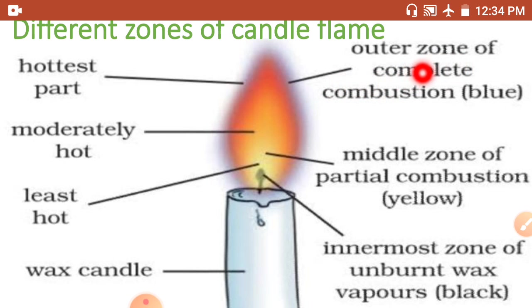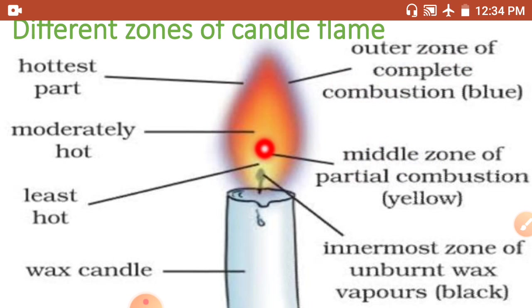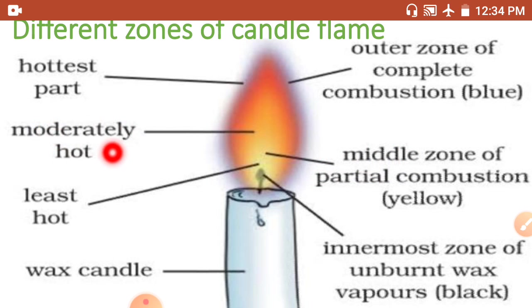The middle zone is yellowish in color. It produces moderate heat, and partial combustion takes place in this zone.